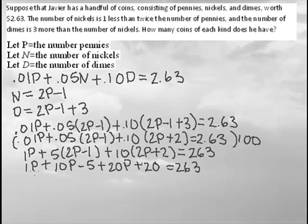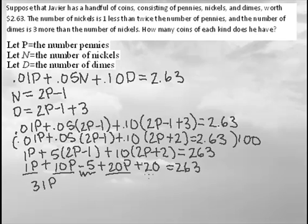Now let's combine like terms. 1p plus 10p is 11p, plus 20p is 31p. Then negative 5 plus 20 gives us: 31p + 15 = 263.